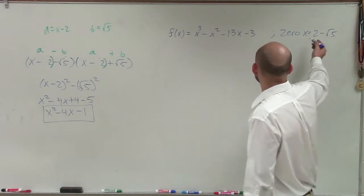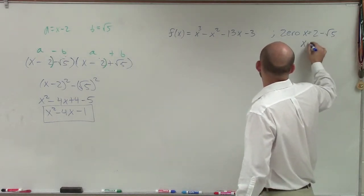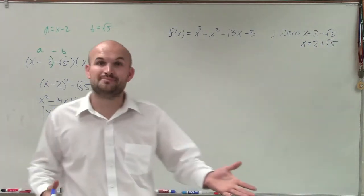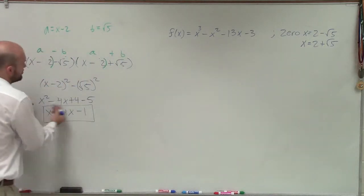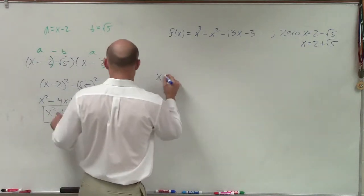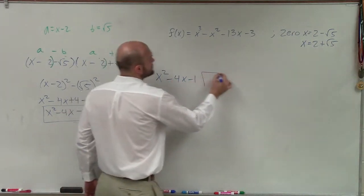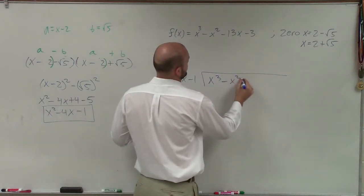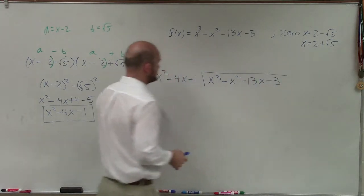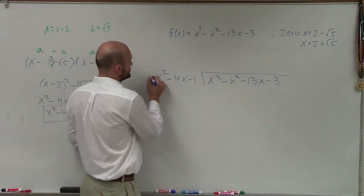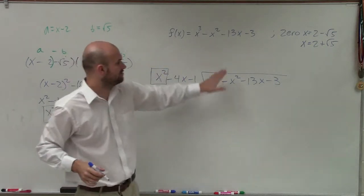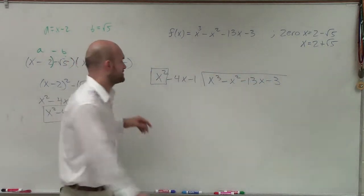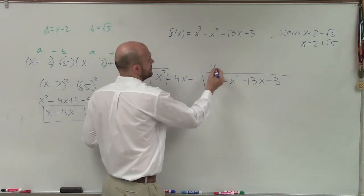Now that's very helpful because I already know two zeros: x = 2 - √5 and x = 2 + √5. But there's one more zero I need to determine. So I'm going to apply long division, because I can't use synthetic division with a quadratic divisor. So now I'm going to use long division to find my remaining zero, dividing x³ - x² - 13x - 3.